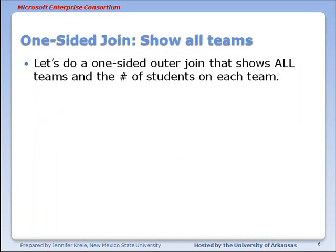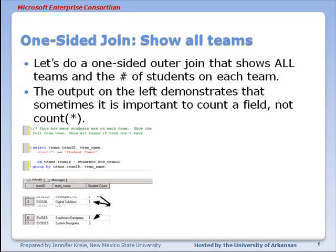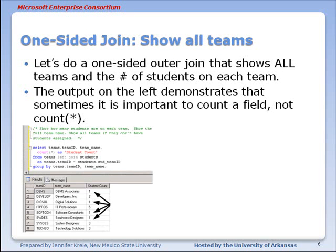Let's do a one-sided outer join that shows all teams and counts the number of students on each team. The output on the left actually demonstrates that it's important to count a field and not just use count asterisk in some situations. We actually have teams with no students, but they're showing a count of one simply because the count asterisk is counting that single row of display based on the team name.